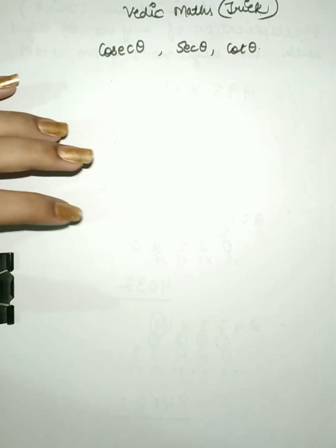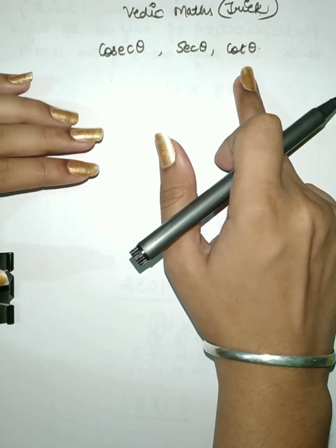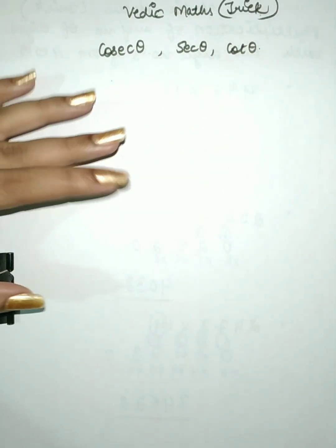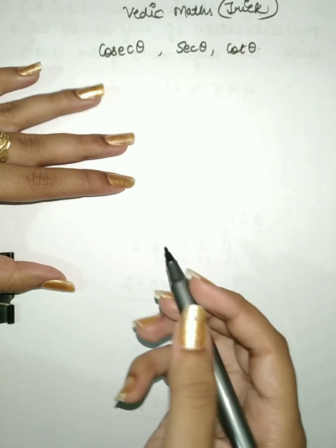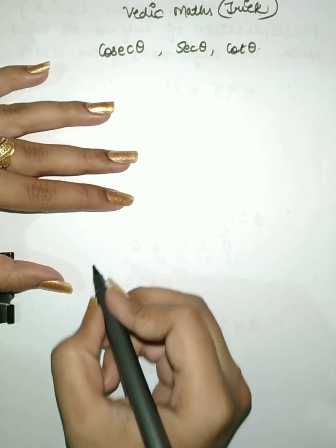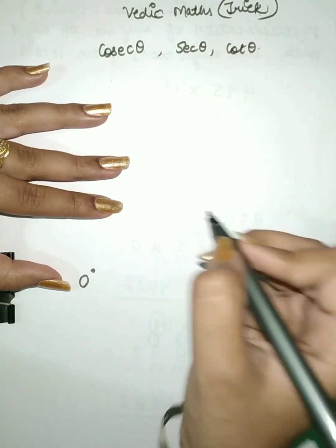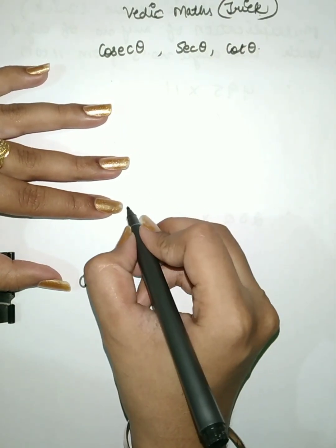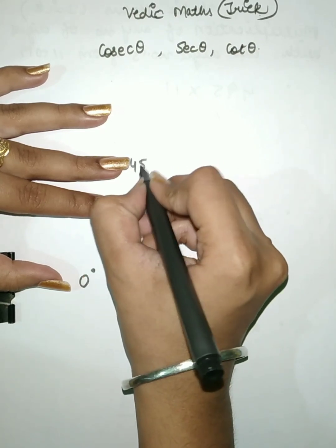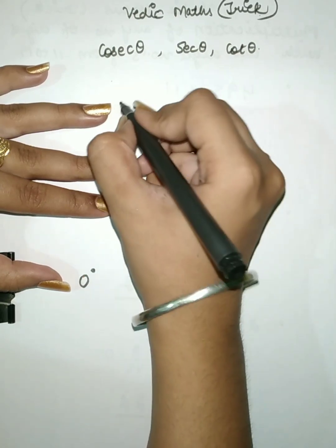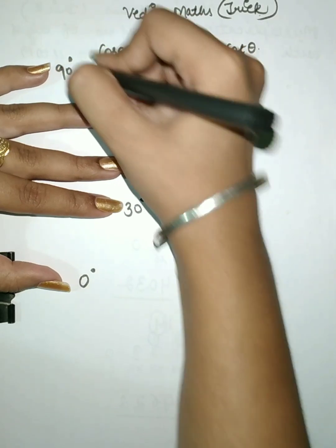We have to find the values of cosecant, secant and cot by using the fingers. We will consider the angles: 0 degree, 30 degree, 45 degree, 60 degree, and 90 degree.